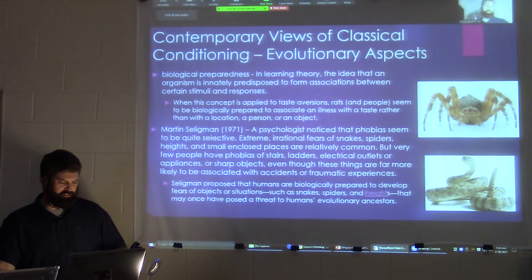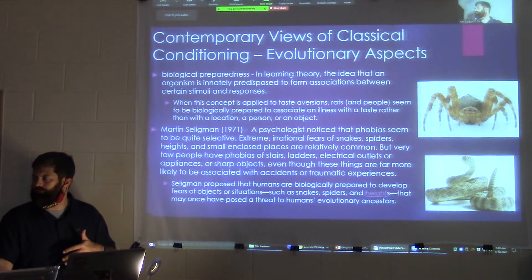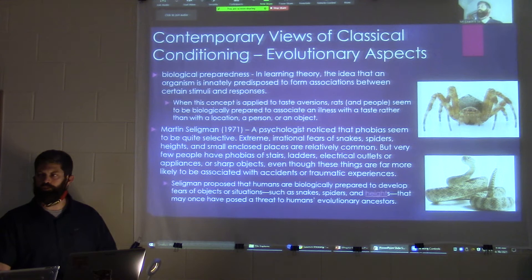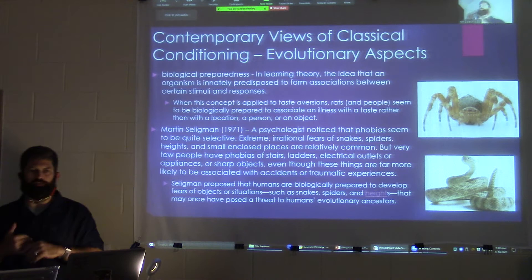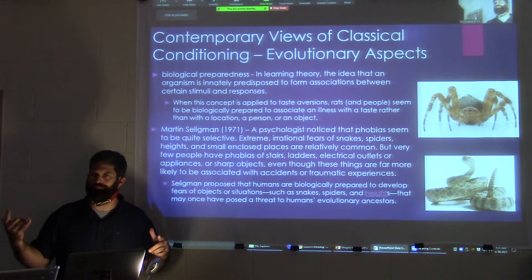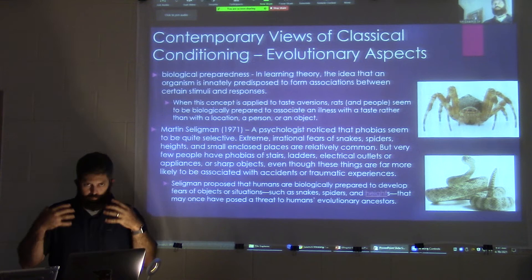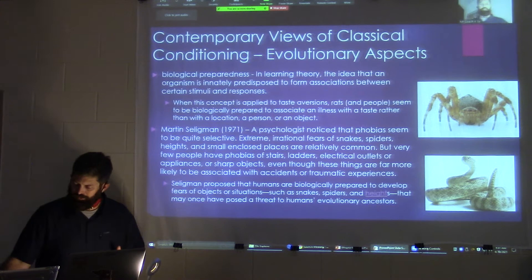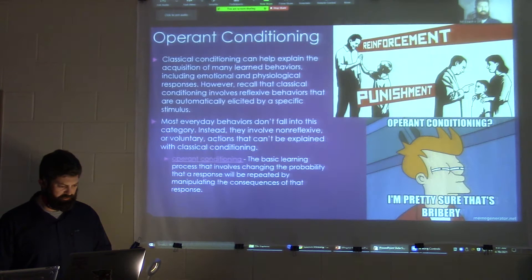Biological preparedness — this is Martin Seligman. He says that we are biologically predisposed to feel certain things about certain stimuli. He goes into what we're naturally scared of as humans — things that have been killing us for 200,000 years of evolution: snakes, heights, spiders, bad storms. Those are real things we are biologically predisposed to be scared of. That's classical conditioning and evolutionary aspects.